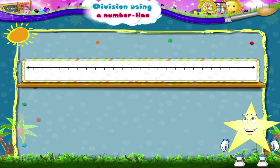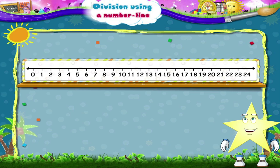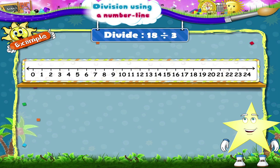Here is the next number line strip. The example is 18 divided by 3. Starry, you are smart. You are already standing on the number 18.